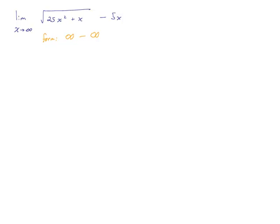Now we start thinking about algebraic forms like this. If I have an a minus b form, I can rationalize the numerator by taking advantage of the difference of squares formula. a squared minus b squared equals a minus b times a plus b. So we think of this as multiplying by the conjugate, which will allow us to remove the square root.